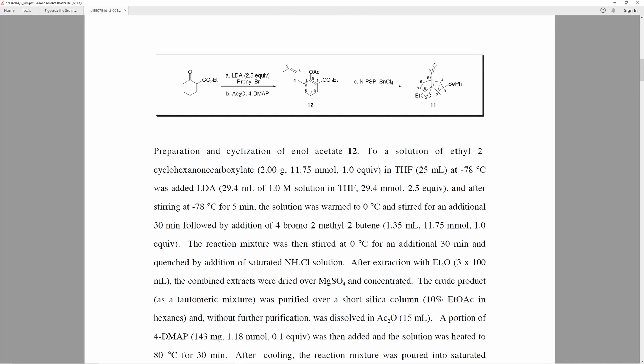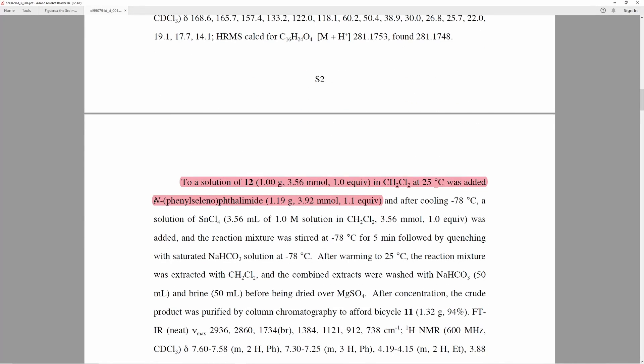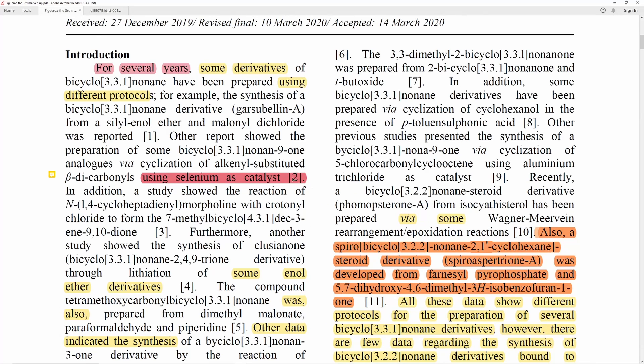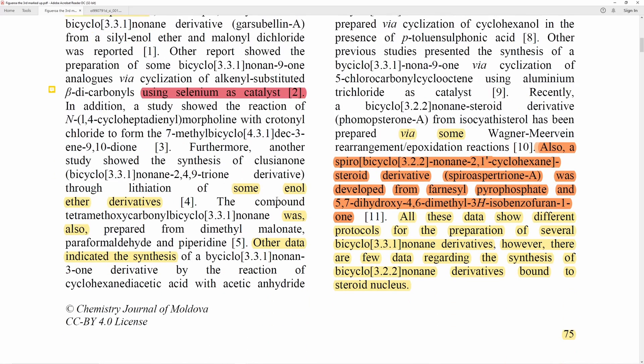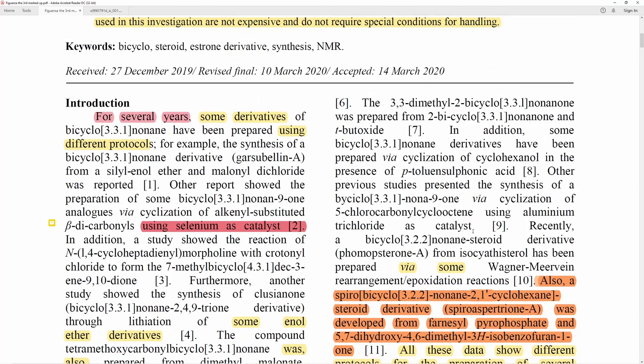So they make this bicyclo species here. This is from a different paper from Nicolaou's group, and you can see they go from here to here using this acronym here, NPSP. NPSP, and so you can see a selenium is added, and then we're just going to go to the next page, and you can see NPSP, N-phenylselenophthalamide, is used with 1.1 equivalents. So Figueroa was mistaken here.